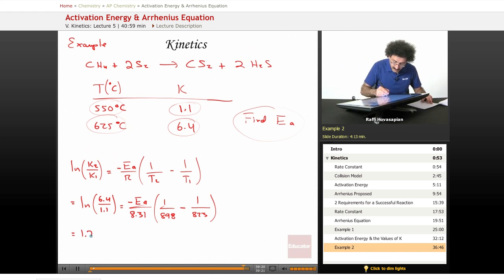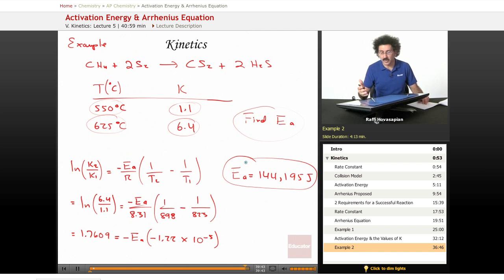Equals 1.7609 equals minus E sub A times minus 1.22 times 10 to the negative 5. We end up with an activation energy of 144,195 joules or 144 kilojoules.